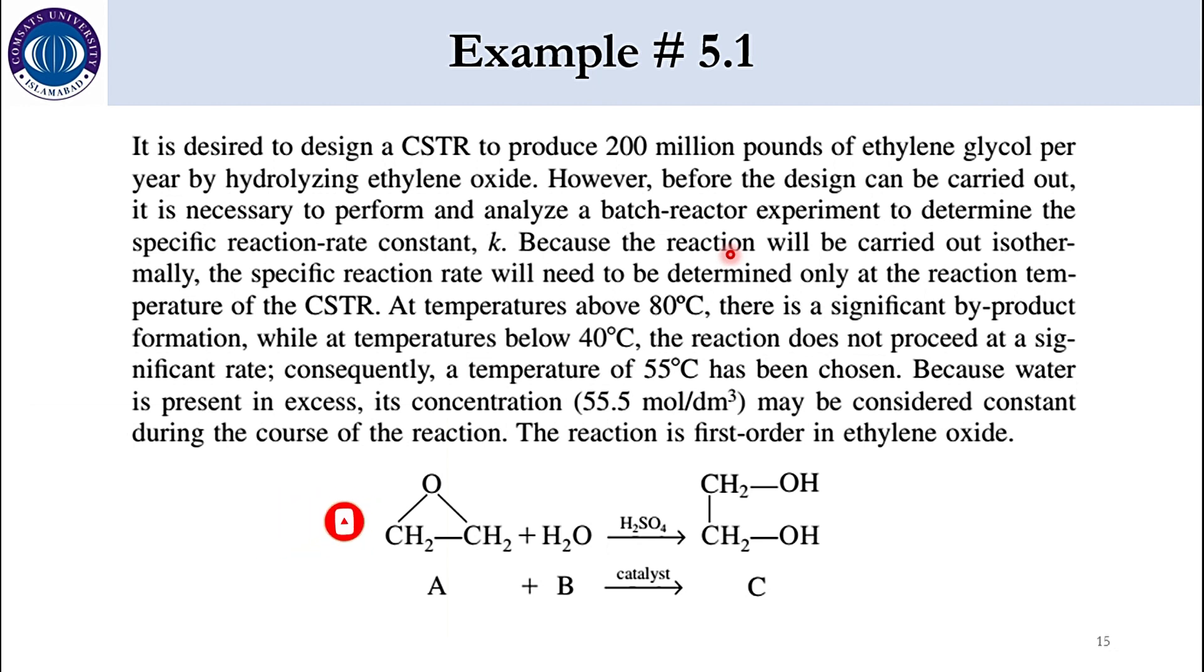In our previous lecture on building block number 4 which is isothermal design or chapter number 5 of this book we have solved some equations for the batch reactor. And now it's time to solve an example related to the batch reactor design. So the problem states that it is desired to design a CSTR to produce 200 million pounds of ethylene glycol per year by hydrolyzing ethylene oxide. However before the design can be carried out it is necessary to perform and analyze a batch reactor experiment to determine the specific reaction rate constant k.